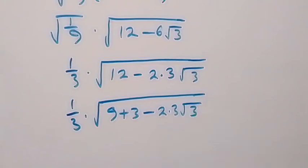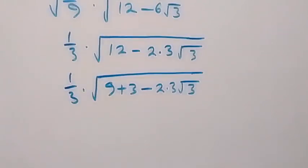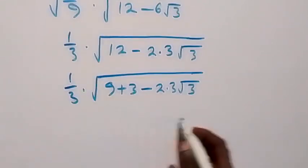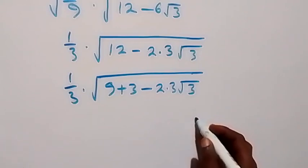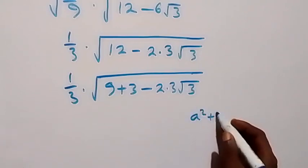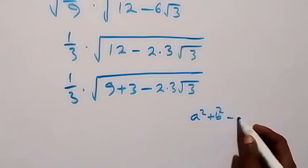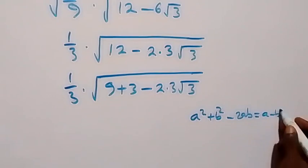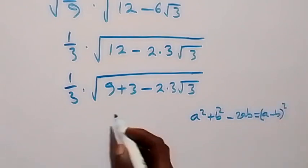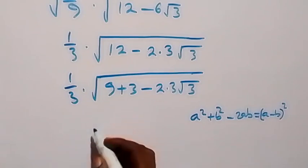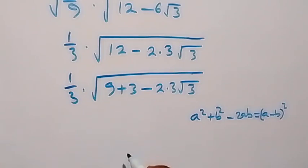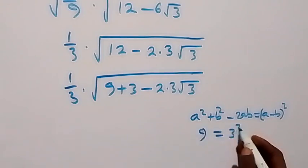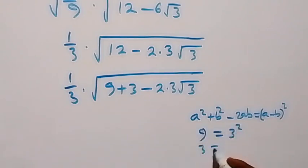From here, when we look at this, we can form it in the form of a squared plus b squared minus 2ab, which gives us a minus b, all squared. It implies that here we can write 9 as 3 squared, and we can write 3 as root 3 squared.